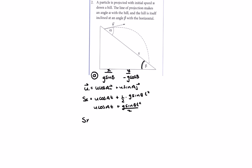And the displacement in the y direction, it's going to be u sin a, not b, u sin a times t, plus a half acceleration, minus g cos b times t squared over 2.